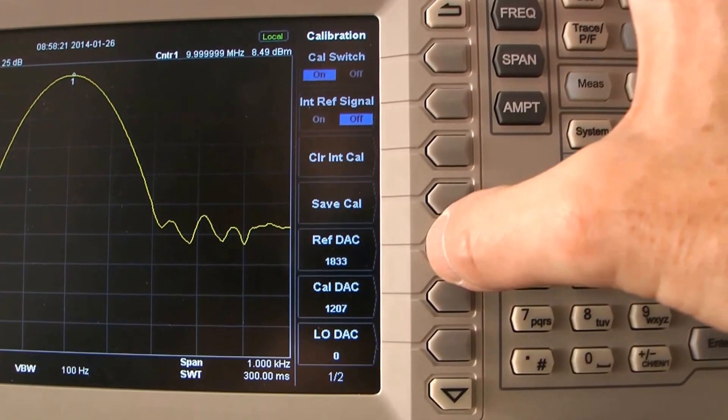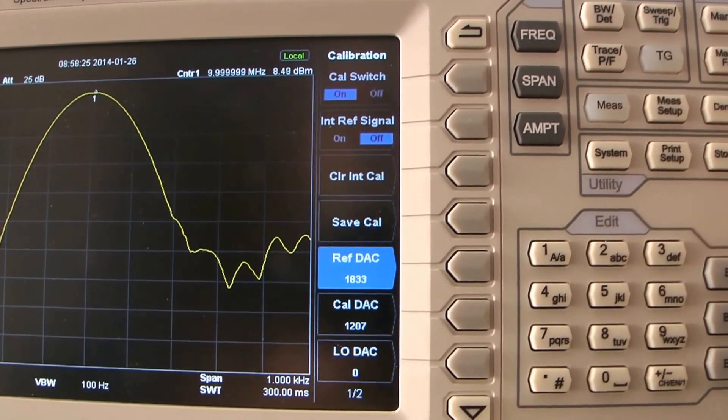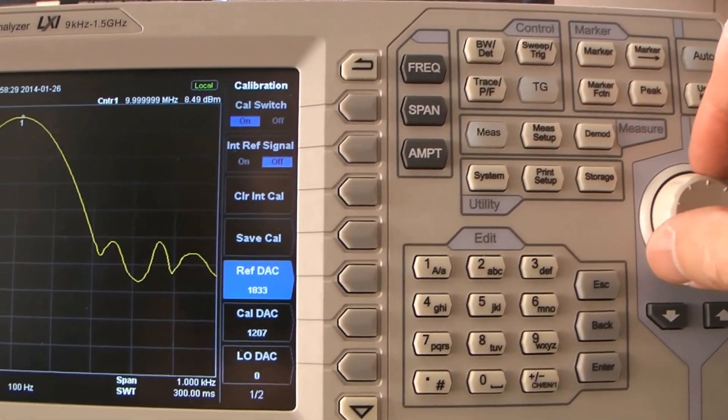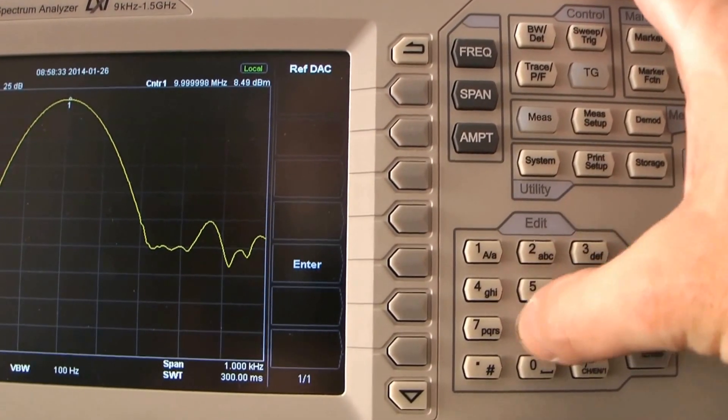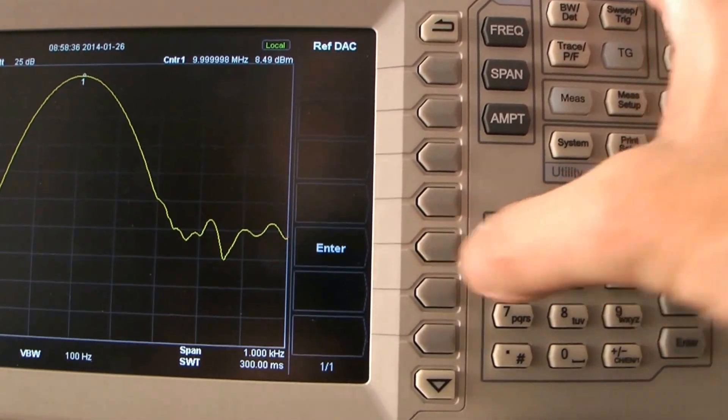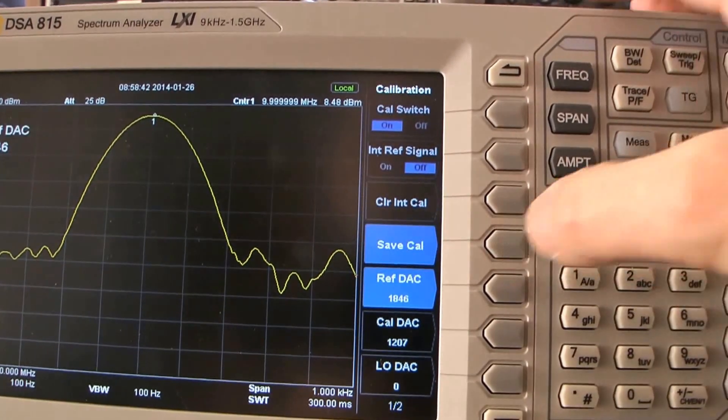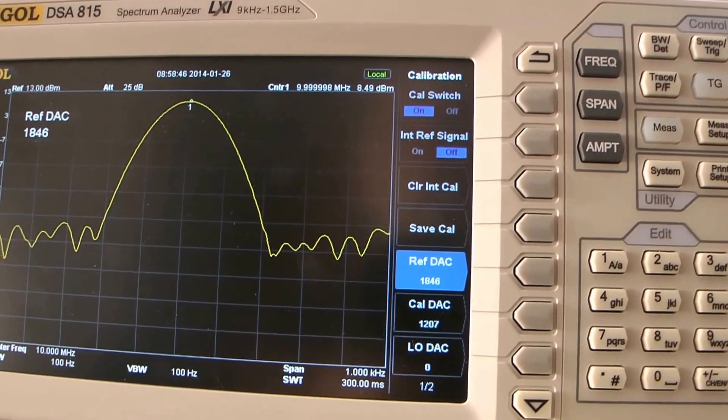So the way it works is you select that. You can't dial it, which is ridiculous. It has no effect. What you have to do is key in the value. So I'm going to put this back to 1846, which was the factory setting. And of course you wouldn't want to use this enter key. You would have to use this enter key. Alright, and then I can save that calibration.